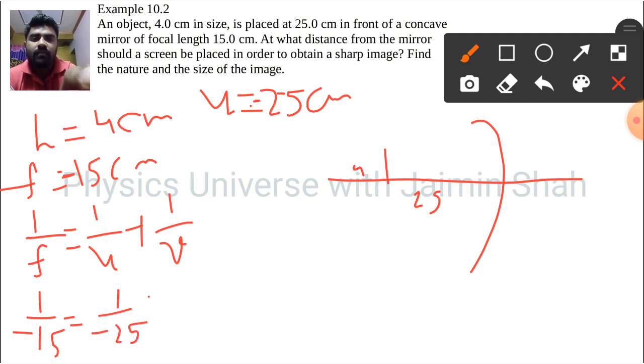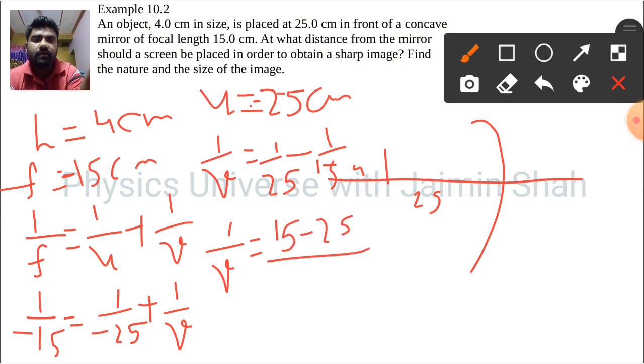What we get is 1 upon v equals 1 upon 25 minus 1 upon 15. So 1 upon v equals 15 minus 25 upon 15 into 25. The answer will be negative, so v is negative here.